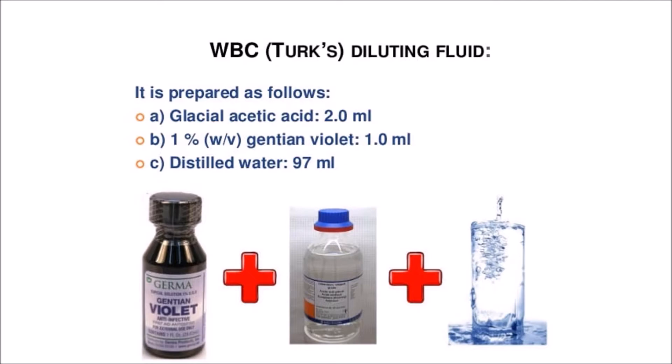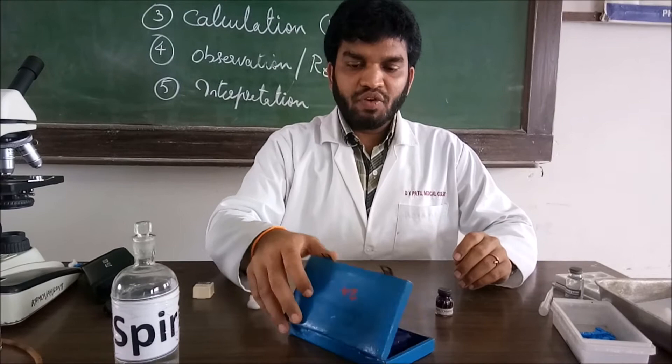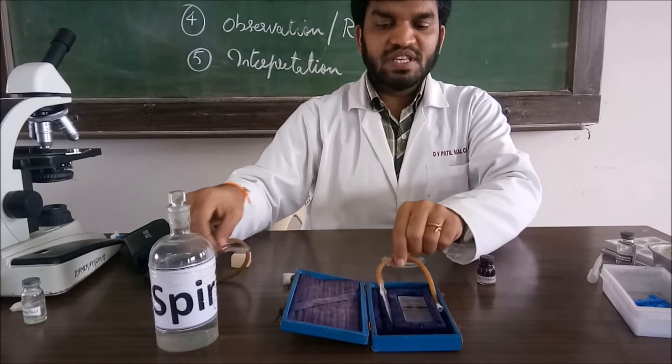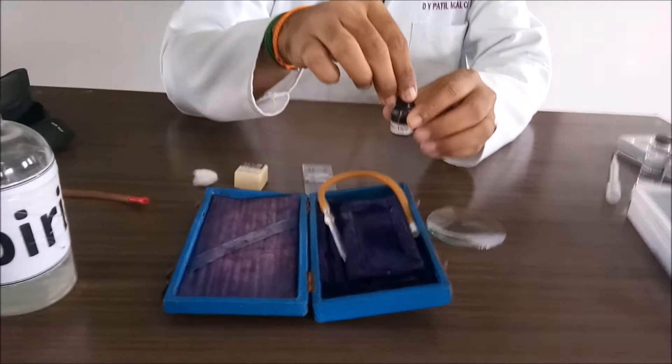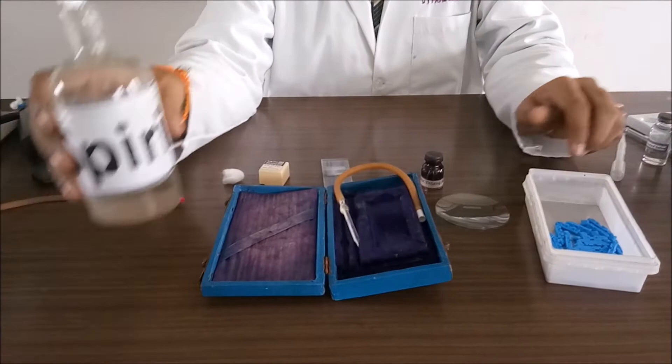For WBC count we require hemocytometer. If you open the hemocytometer, there will be a RBC pipette, WBC pipette, Neubauer chamber, cover slip, watch glass, WBC diluting fluid Turk's fluid, aseptic lancet, spirit, cotton. These are the required materials. Keep it ready.